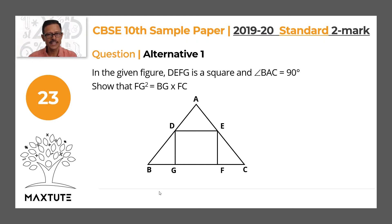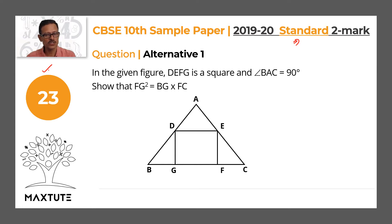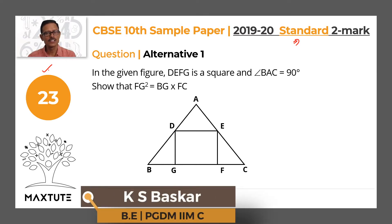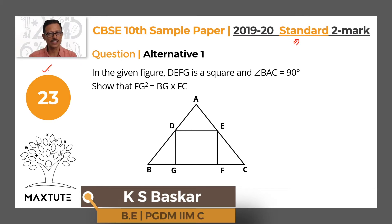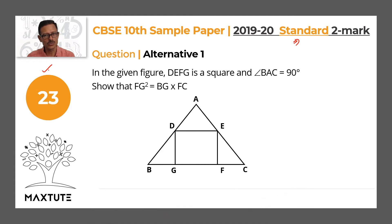This is the CBSE Class 10 Math year 2020 sample paper, standard version, 2-mark question number 23. This question has two alternatives. Both alternatives test concepts from triangles: Alternative 1 focuses on similar triangles, and Alternative 2 focuses on equilateral triangles and congruent triangles. Solutions to both alternatives are provided in this video.